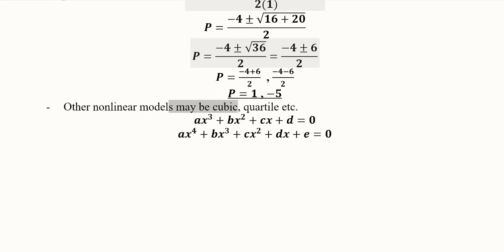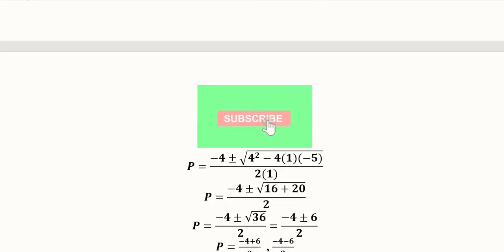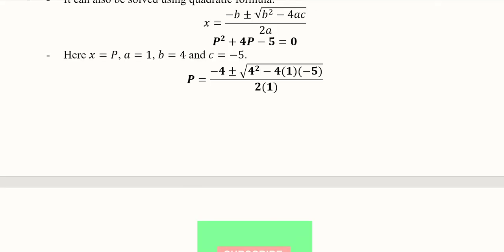By using the cubic functions or quartile functions. This is a general form of the cubic function, and this is the general form of a quartile function. So this was the example of a supply function in quadratic specification.